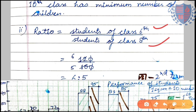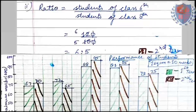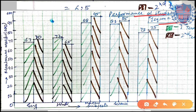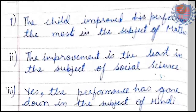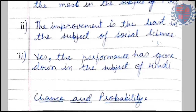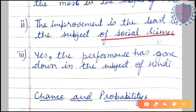The ratio of students in class 6 to class 8 is 6.5. For the double bar graph: the title is 'Performance of students', scale is 10 marks, subjects are along the horizontal axis, and marks are along the vertical axis. Green represents the first term and brown represents the second term. The child improved most in maths, improved least in social science, and performance went down in Hindi.